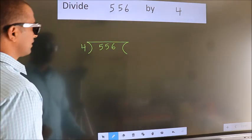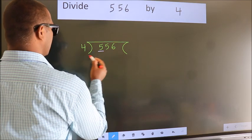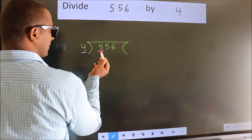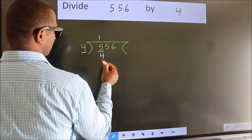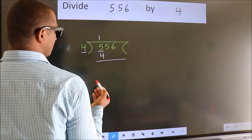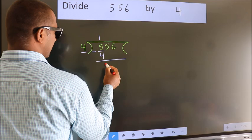Next. Here we have 5, here 4. A number close to 5 in 4 table is 4 once 4. Now we should subtract. We get 1.